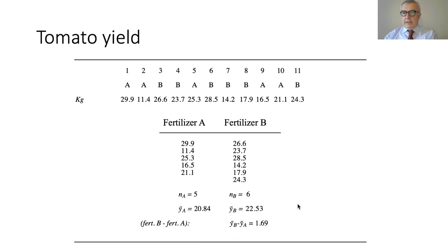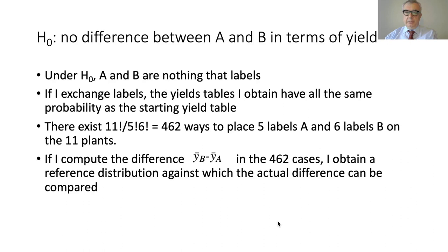Our farmer has studied statistics and knows that the sample average for A and the sample average for B are both random variables, and so is their difference — this is just one realization. How can we trust that this difference is not due to chance alone? Next time we run the experiment, fertilizer A might even outperform B. We need to decide if we have a statistically significant result, and this is where statistical decision theory comes in. The null hypothesis here is that there is no difference between A and B in terms of yield.